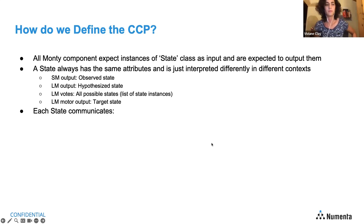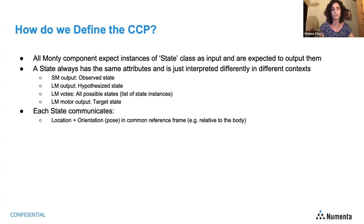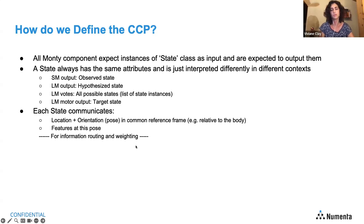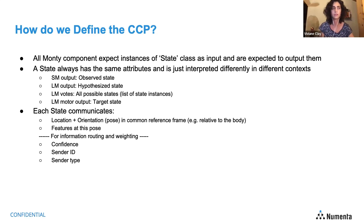Each state communicates the location and orientation — the pose — in a common reference frame, for example relative to the body. It also communicates features at this pose, which are optional and can be as many as needed and modality-specific. Additionally, there is a confidence value, a sender ID, a sender type indicating whether it's a learning module or sensor module, and a boolean flag for whether to use this state.